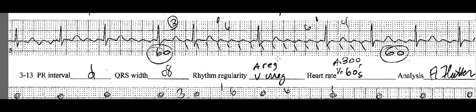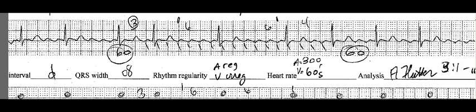Your atrial rate looks like there are five little boxes between flutter waves, so that would be an atrial rate of 300. I did two six-second strips and got 60 — six times ten on each end — so the ventricular rate is in the 60s and the atrial rate is in the 300s. The atrial rate is very consistent, as proven by my markings. The ventricular rate was irregular. For QRS width, pick any of these three where you can clearly see the R wave and S wave. This would be atrial flutter with a three-to-one to six-to-one ratio.